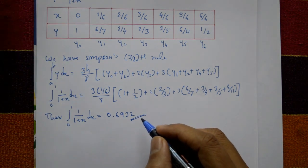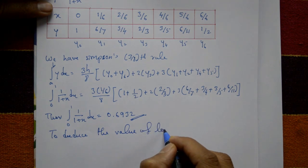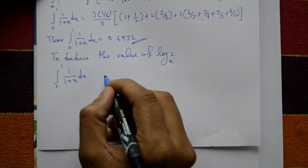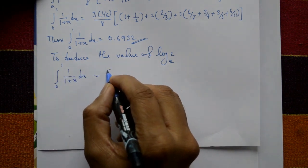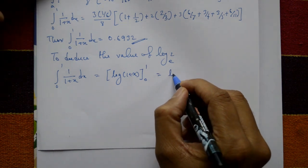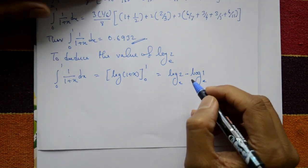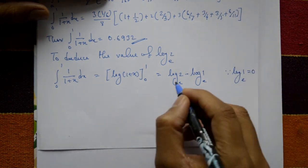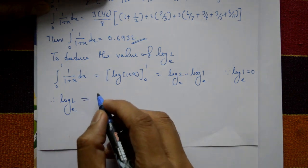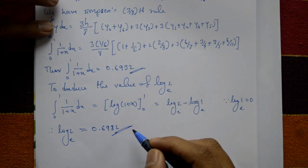To deduce the value of log 2 to base e: integrating 1/(1+x) analytically gives log(1+x) with limits 0 to 1. Substituting: log(2) - log(1) = log 2 to base e. Since log 1 to base e = 0, we get log₂ = 0.6932. This matches our numerical result, confirming the solution.